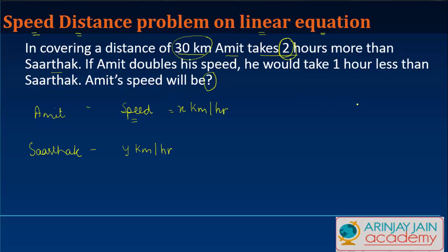We're given the time factor. The distance is 30 kilometers, and we know time equals distance divided by speed. So the time Amit takes is 30/x and Sartak's time is 30/y. The difference between Amit's time and Sartak's time equals two hours.